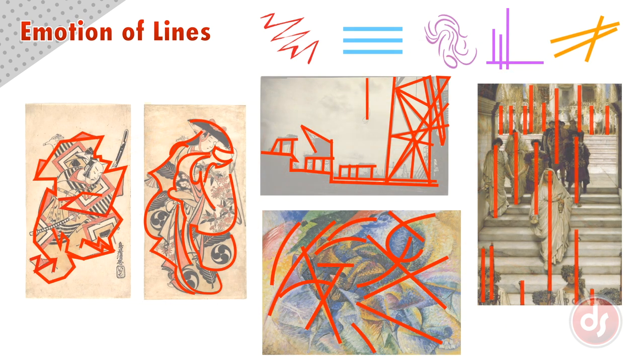Designers will construct their images from actual and implied lines, choosing the type of line that evokes the emotion they want to convey.